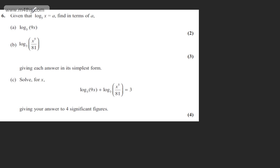This is question six. It says given that log to the base 3 of x is equal to a, find in terms of a, in part a, log to the base 3 of 9x for two marks and in part b, log to the base 3 of x to the fifth over 81 for three marks.